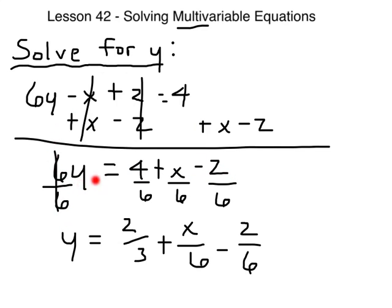So now we have 6y, the y term by itself, equals 4 plus x minus z. Now we're going to get rid of the 6 to get y completely isolated, and we have to divide by 6. So we have to divide every single term over here by 6, and then we have y equals...